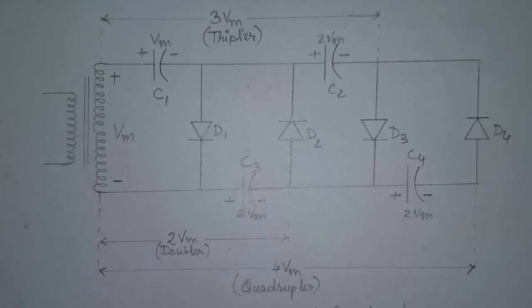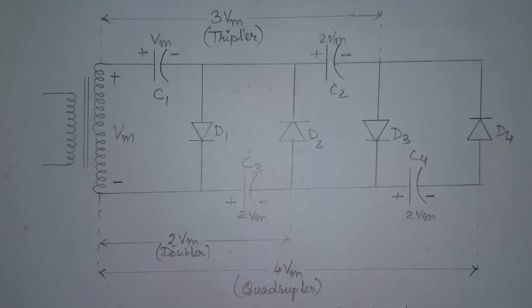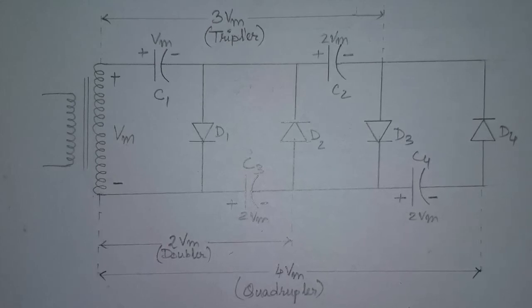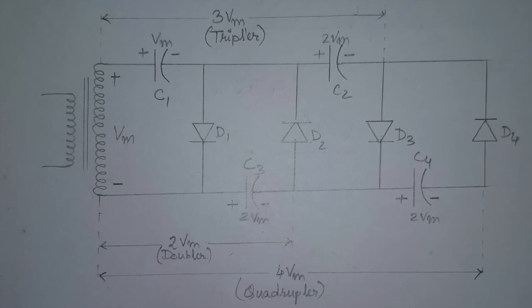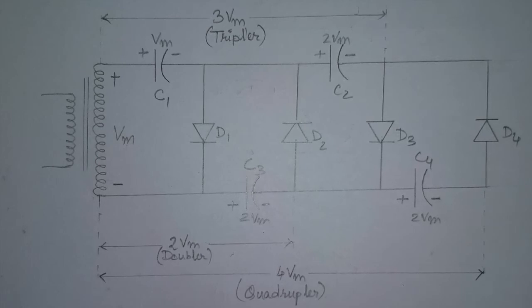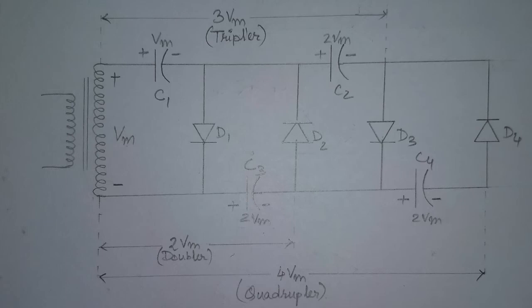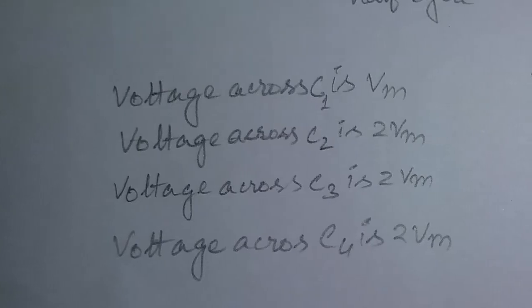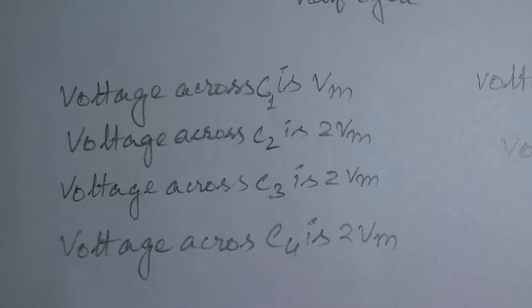Again during the positive half cycle, diode D3 conducts, and the voltage across the capacitor C2 charges capacitor C3 to twice Vm peak voltage. On the negative half cycle, diode D2 and D4 conduct with capacitor C3 charging capacitor C4 to twice Vm.